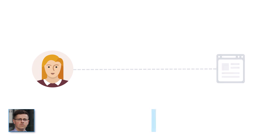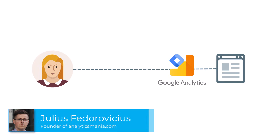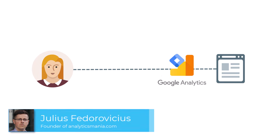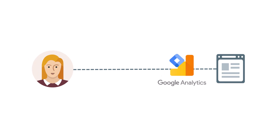Let's imagine a situation: a visitor comes to your website. On that website, there is Google Analytics installed — it might be installed with Google Tag Manager, or maybe it is installed directly in the source code of the website. But that visitor is also using a browser extension that blocks tracking — maybe it's an ad blocker, maybe it's Ghostery, maybe it's something else. There are plenty of such browser extensions.